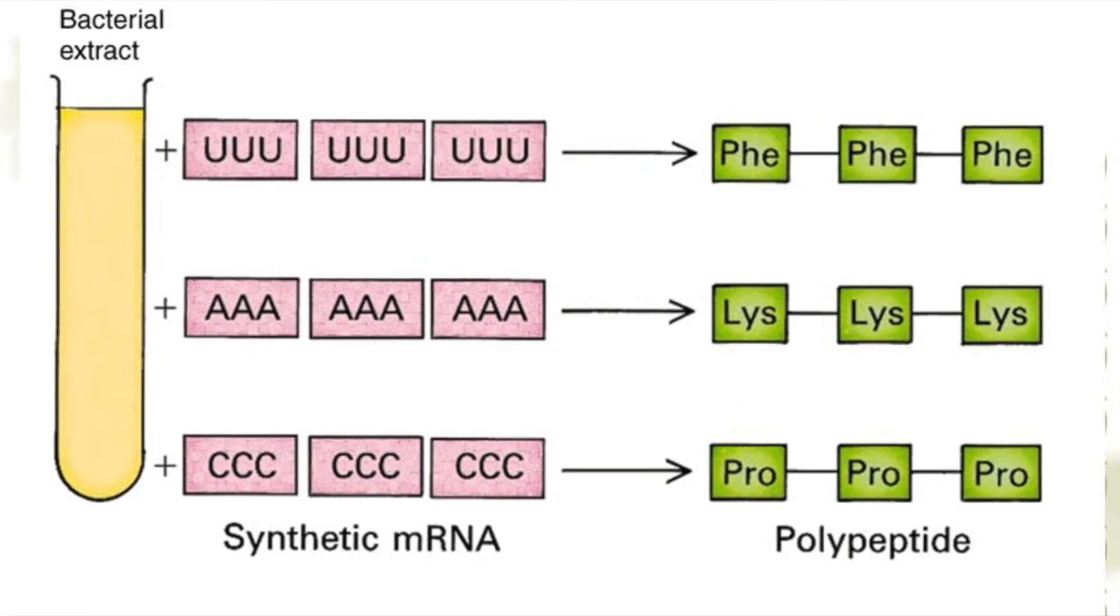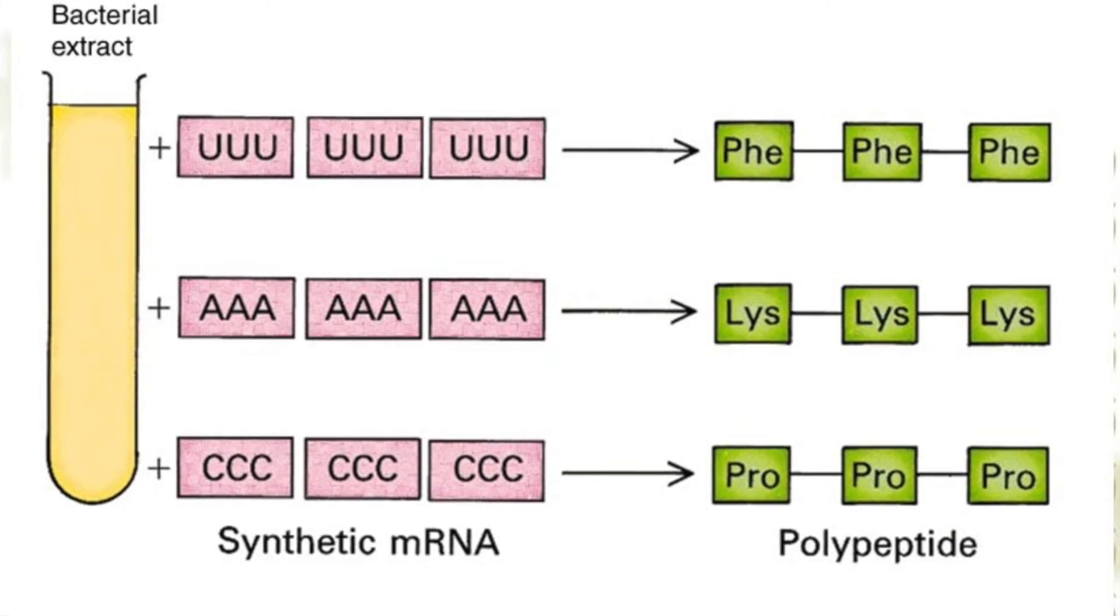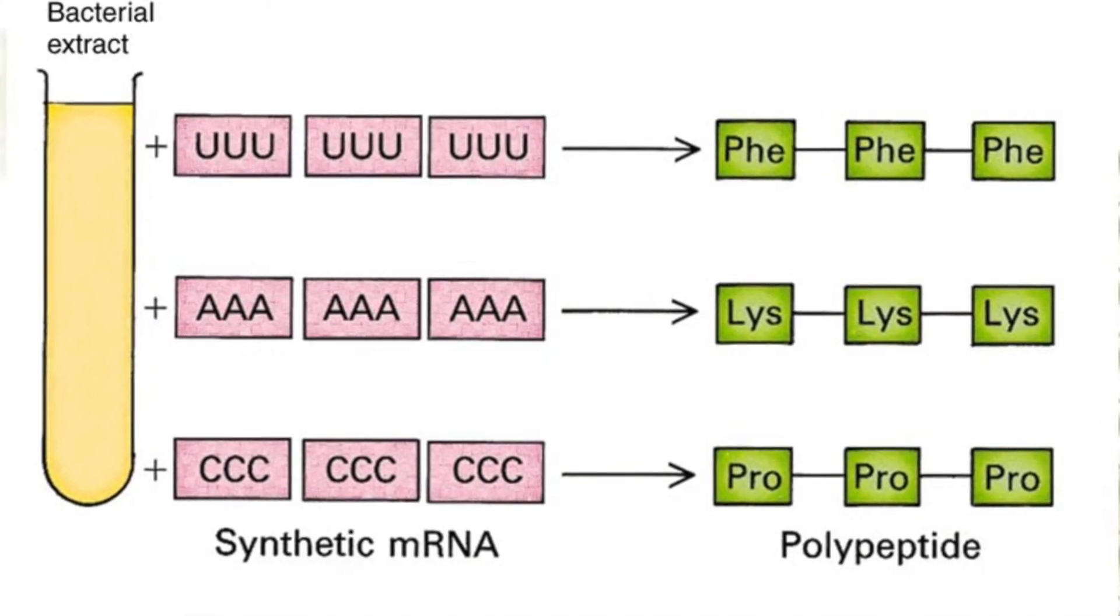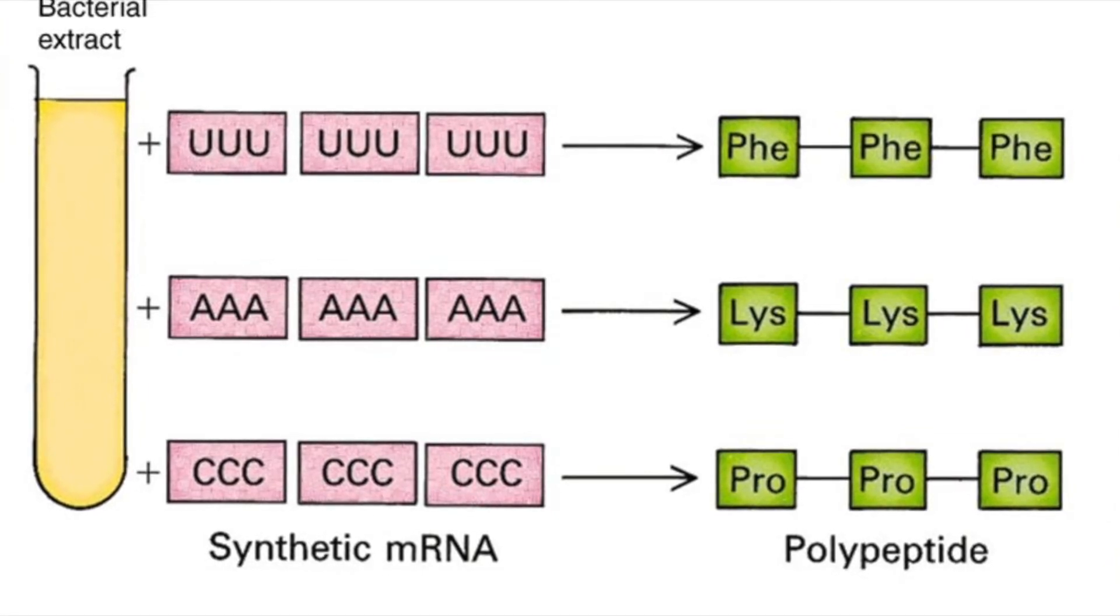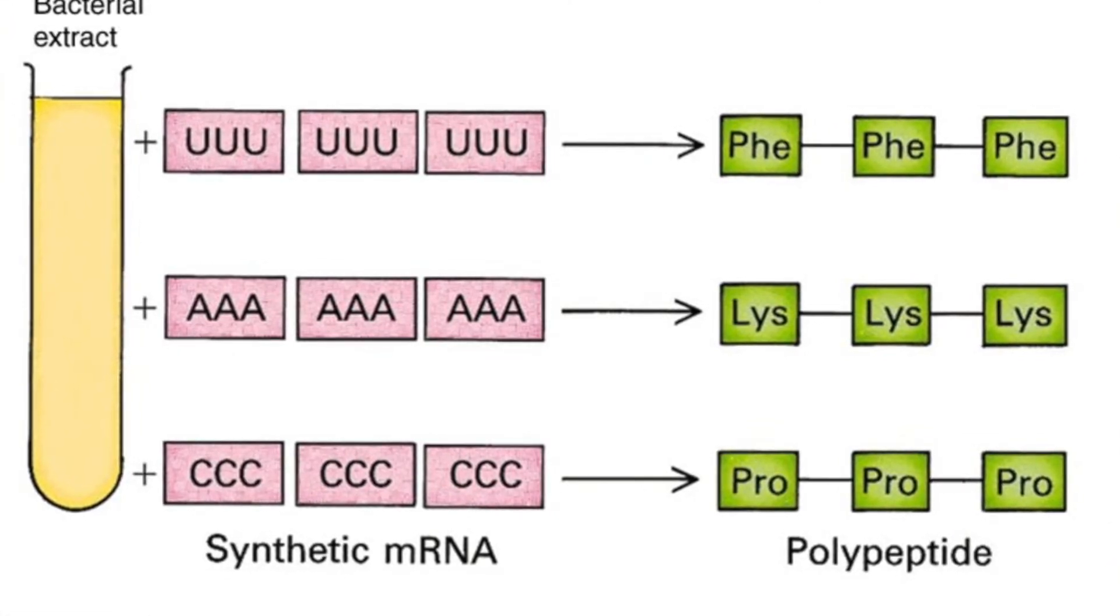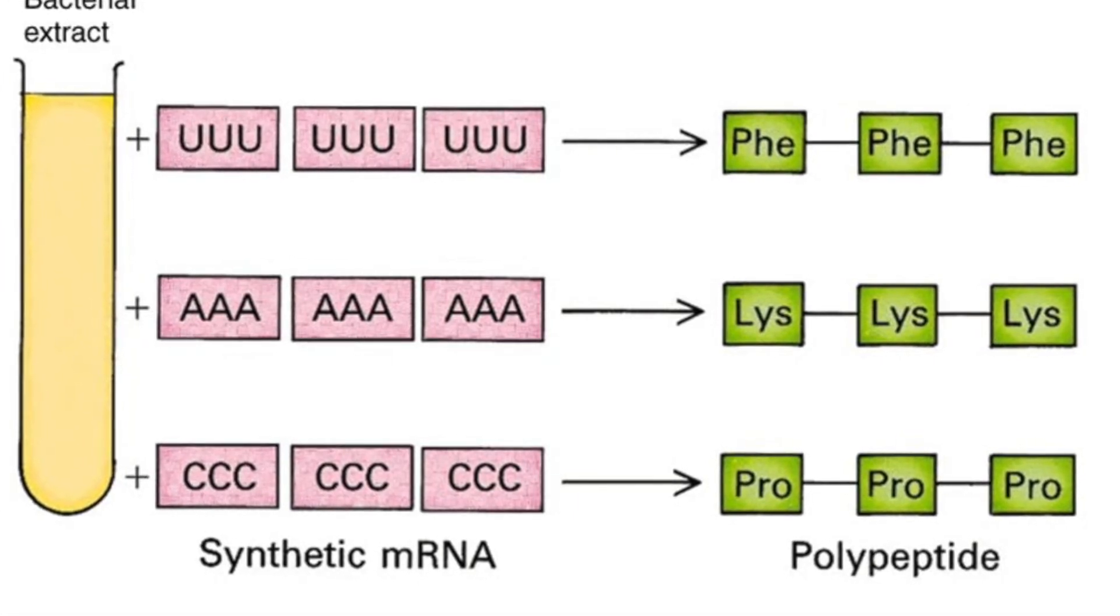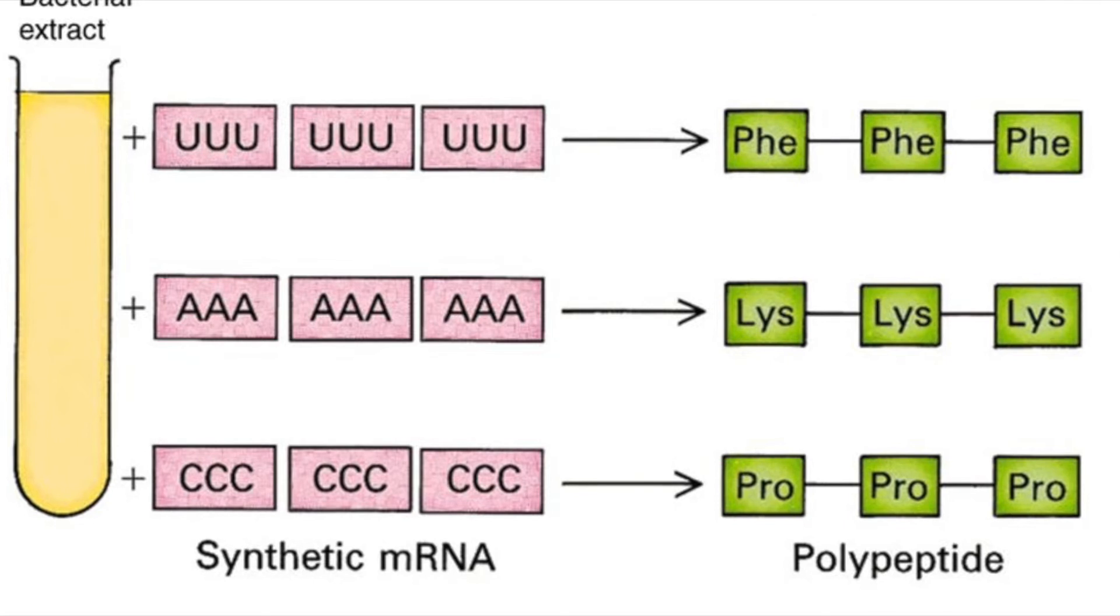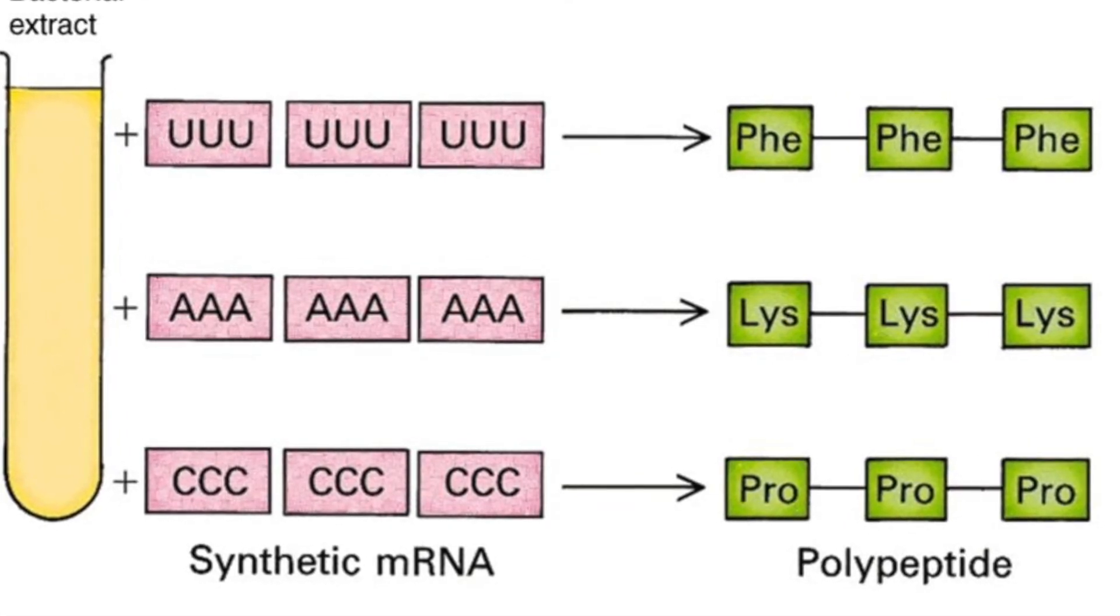They added these polynucleotides to 20 test tubes. The test tubes contained all 20 amino acids and the other necessities for translation. In each tube, a different amino acid was radioactive, and in the tube where phenylalanine was radioactive, there was a radioactive protein.